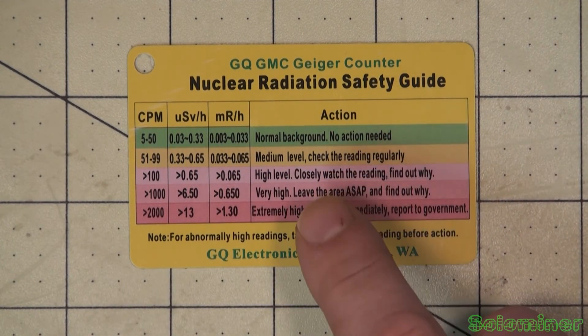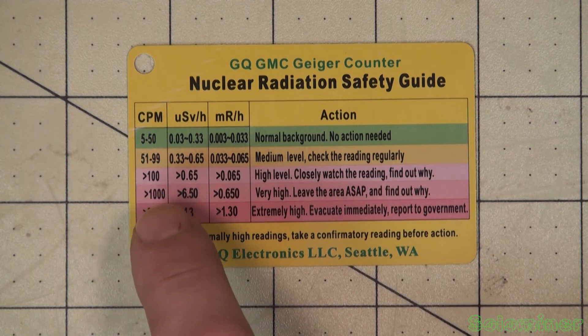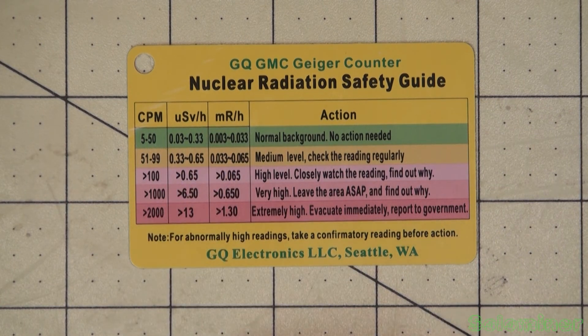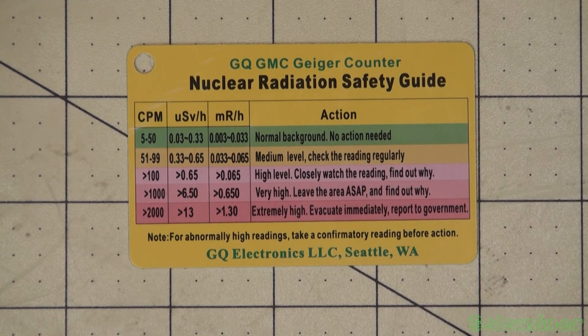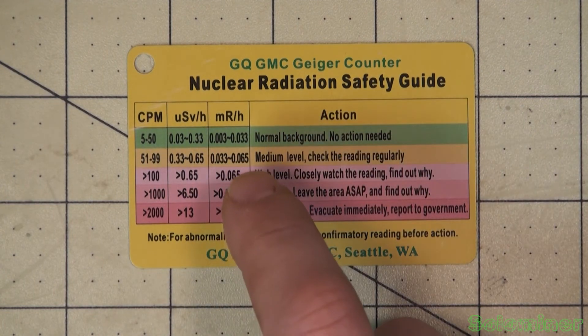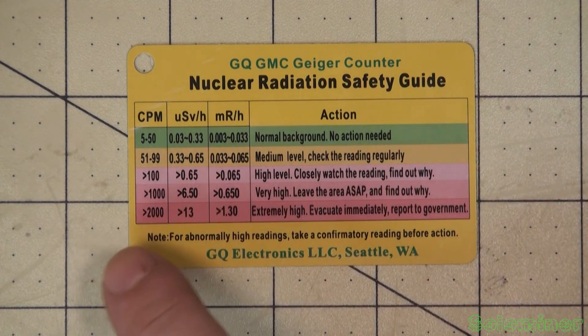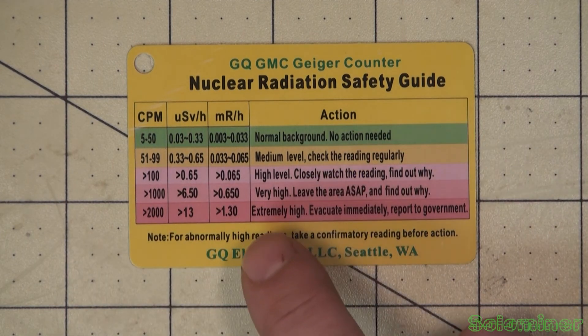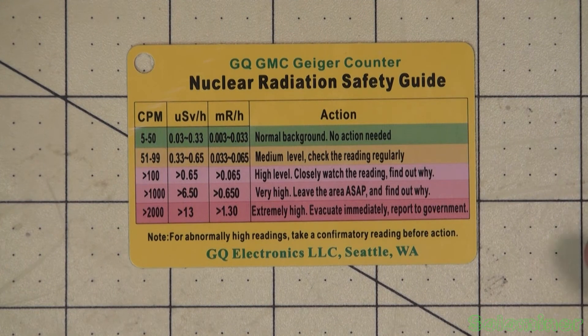So we have this card that will kind of give you a reference to what these readings are. You have normal background which is 5 to 50 CPM, and then the sieverts. I don't think it's micro because it would go micro, milli, and then sieverts. So U is nanosieverts, I don't know. And then you have microrem or millirem. It gives you kind of a baseline of what to look at here. So right now we're getting 50 to 60, so you can see that's medium level, check readings regularly.